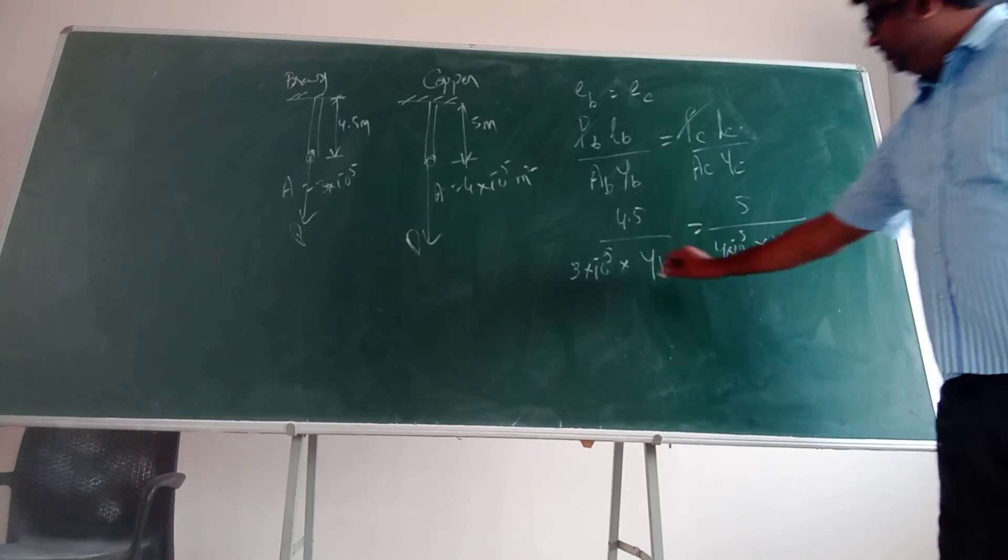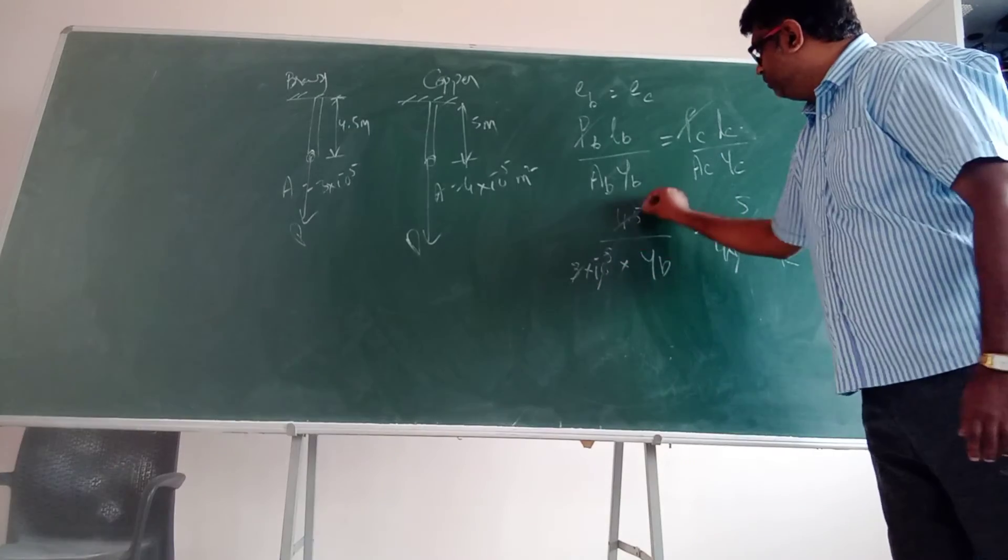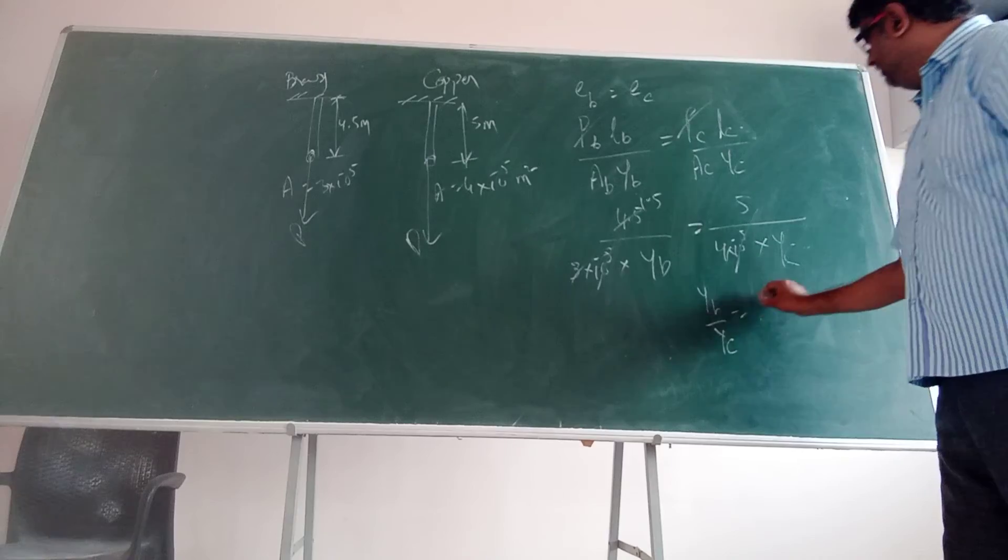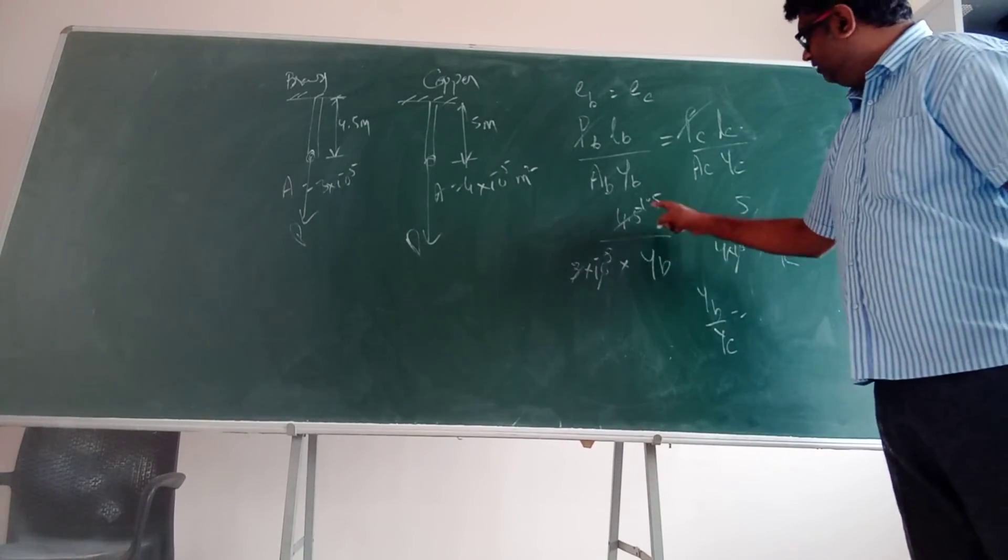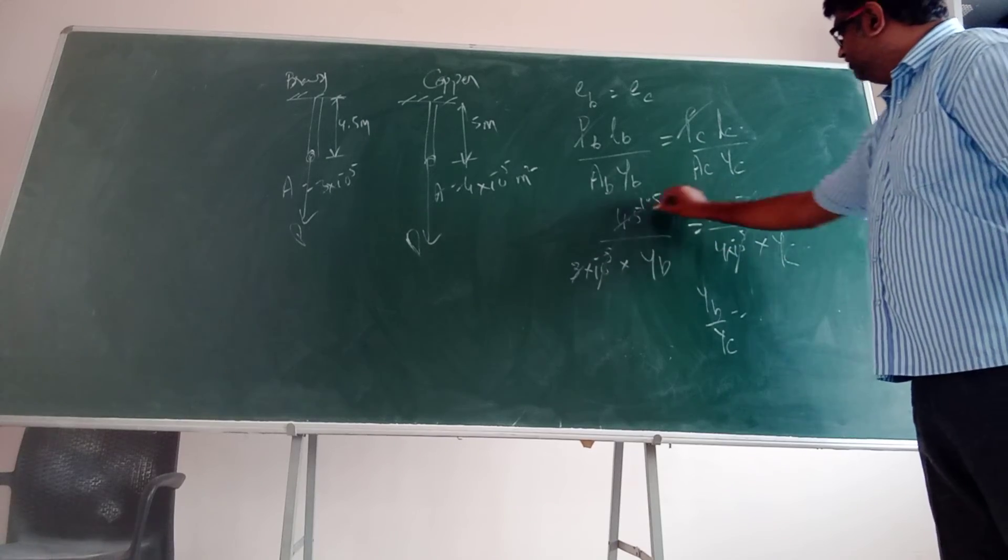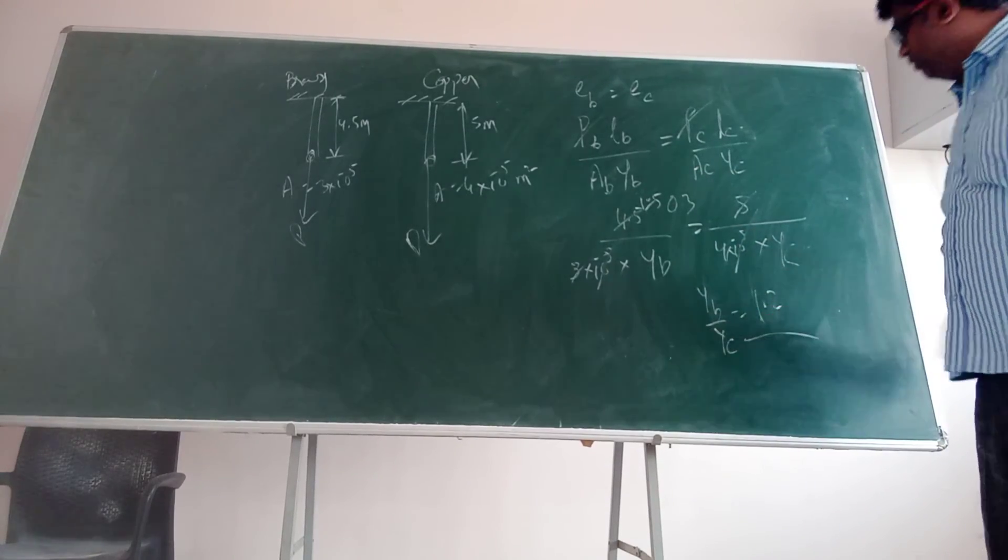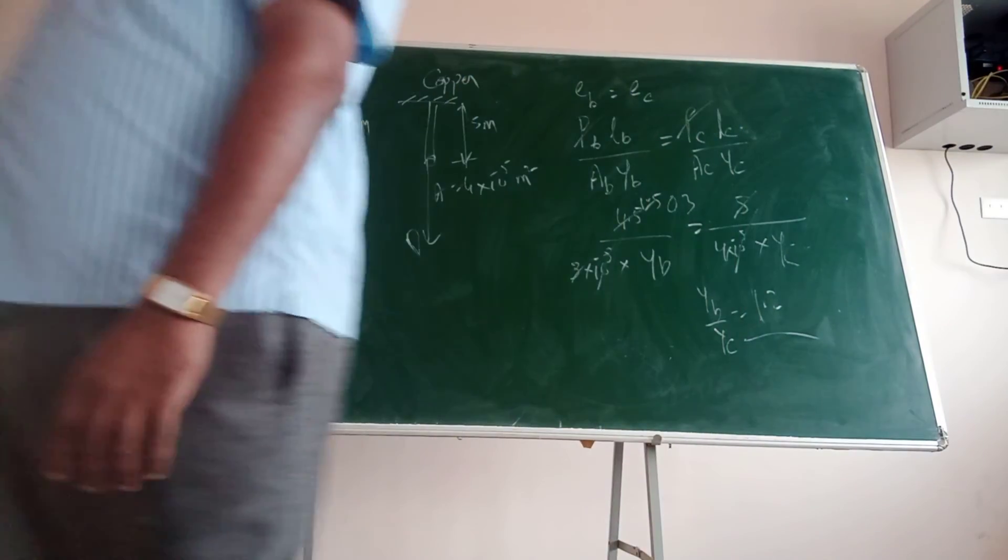Okay, 10 to the power of minus 5 gone. So this is 1.5 times. So Y_B by Y_C will be equal to 5 into 4. Sorry, this is 1.5, so this is 0.3. So 0.3 into 4 which is 1.2. Okay.